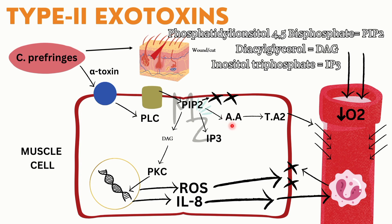Importantly, PIP2 is also broken down into arachidonic acid, which is eventually converted into thromboxane A2. Thromboxane A2 causes vasoconstriction of blood vessels, decreasing the amount of oxygen delivered because less blood is transferred. This decreased oxygen leads to decreased ATP production, leaving less energy for tissue cells, and eventually the cell dies.